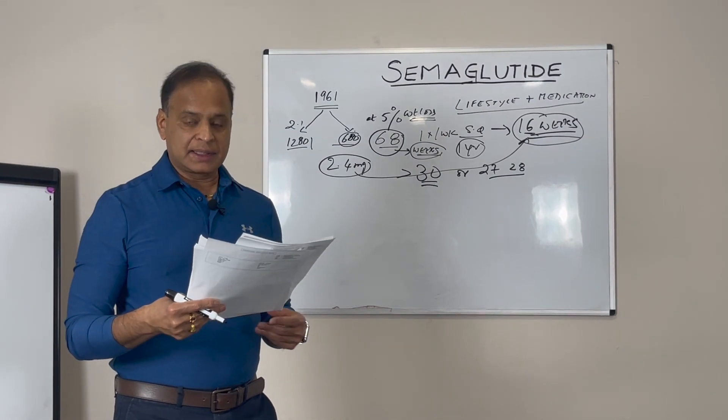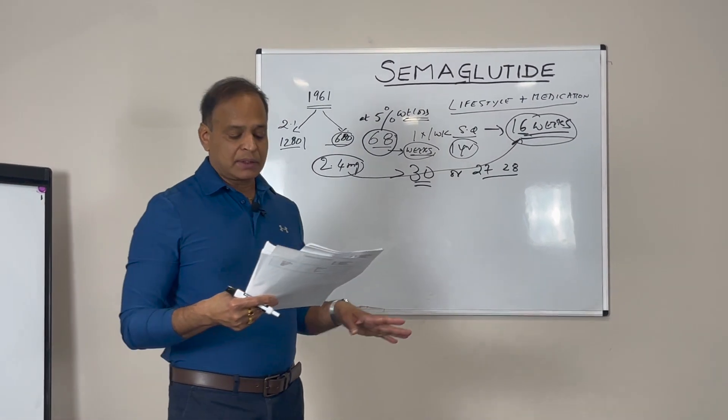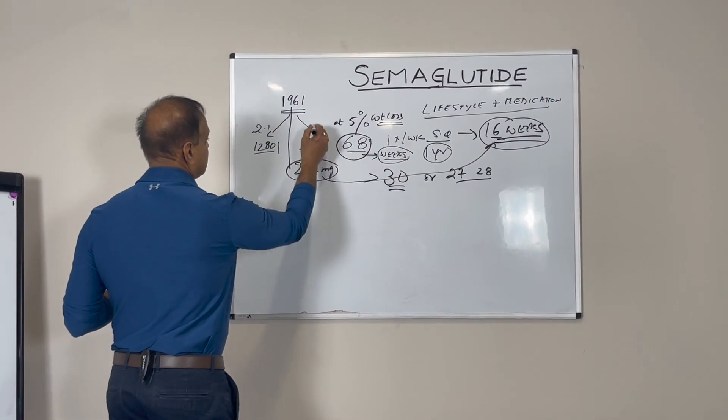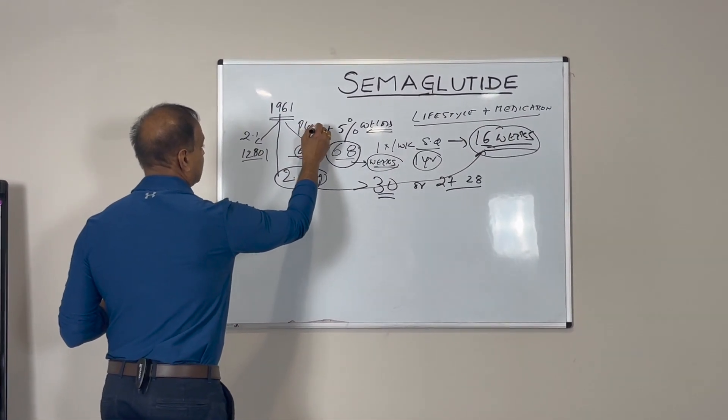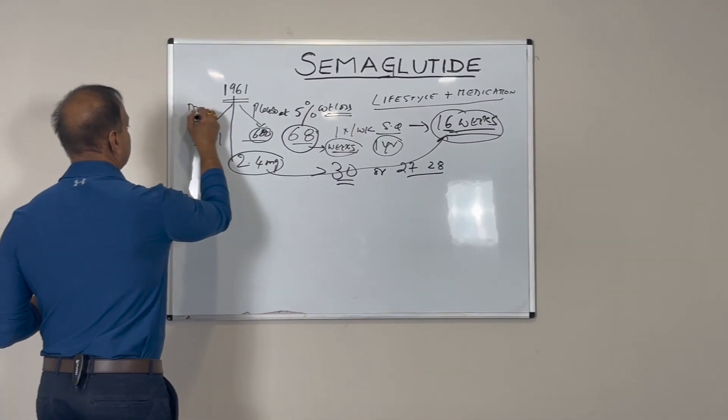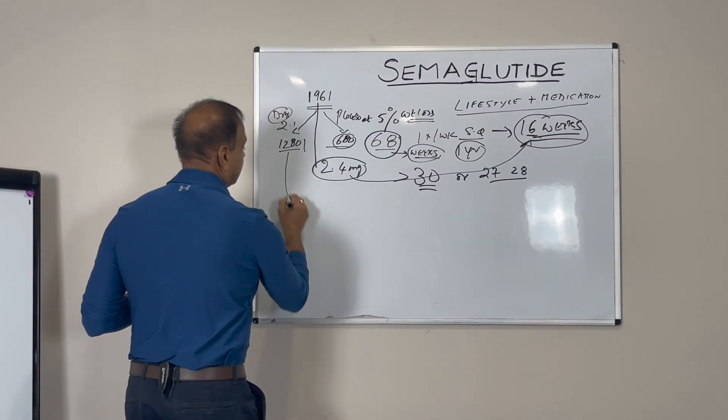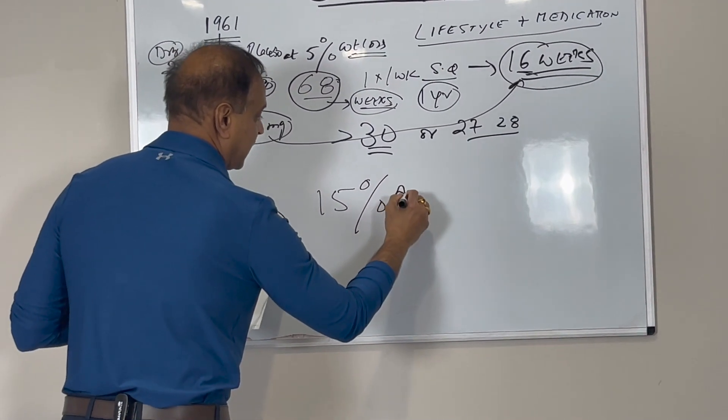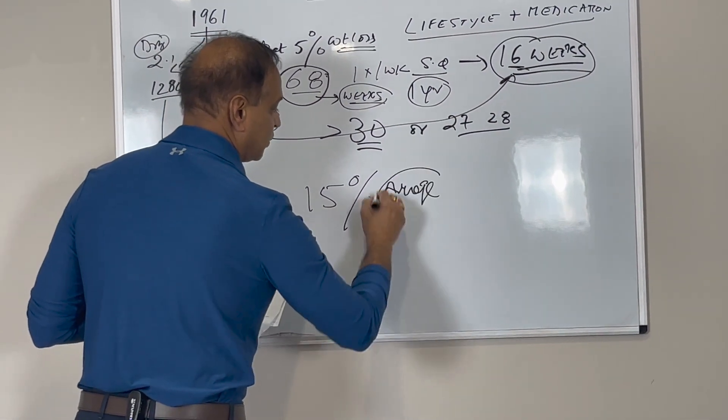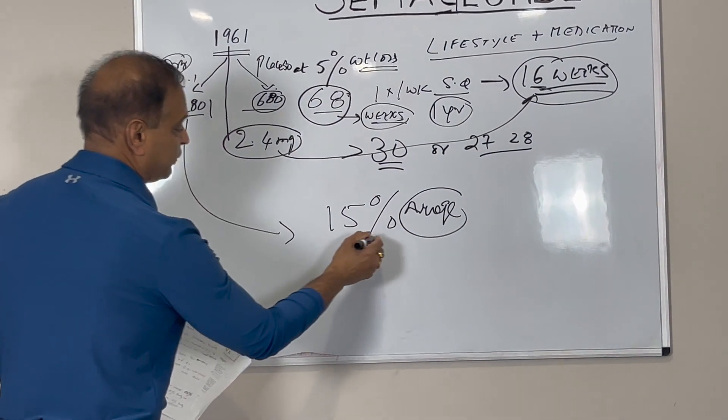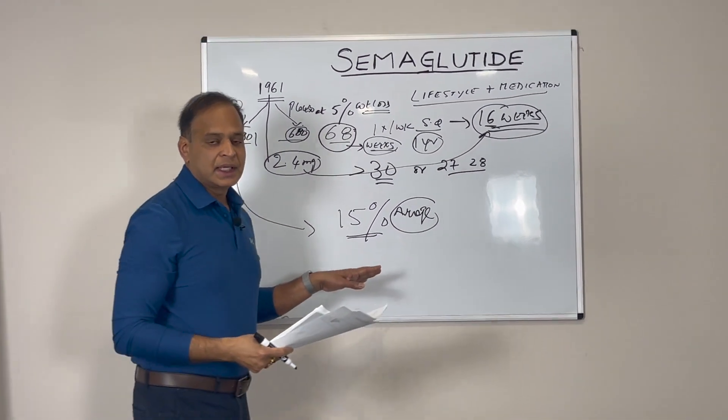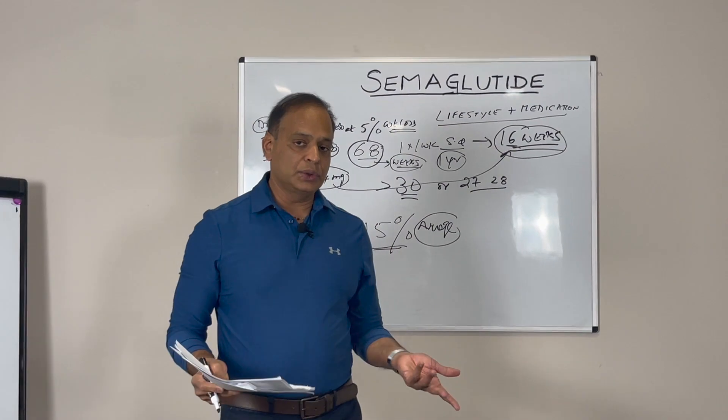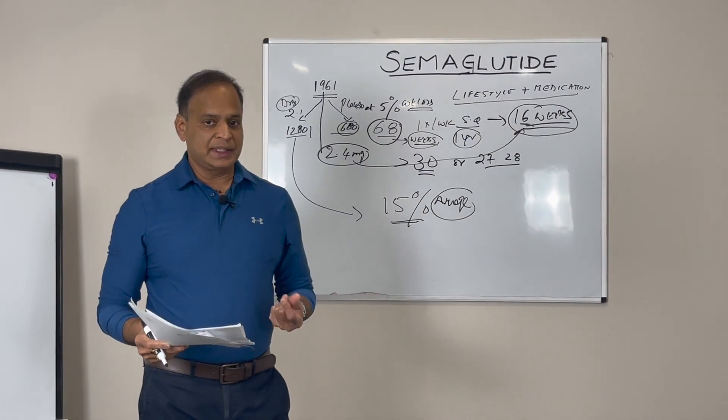The results were amazing. People in the semaglutide group had 15% average weight loss. When you say average, about 50% of people had 15% weight loss. This is remarkable because this doesn't usually happen with any weight loss medications used in practice.